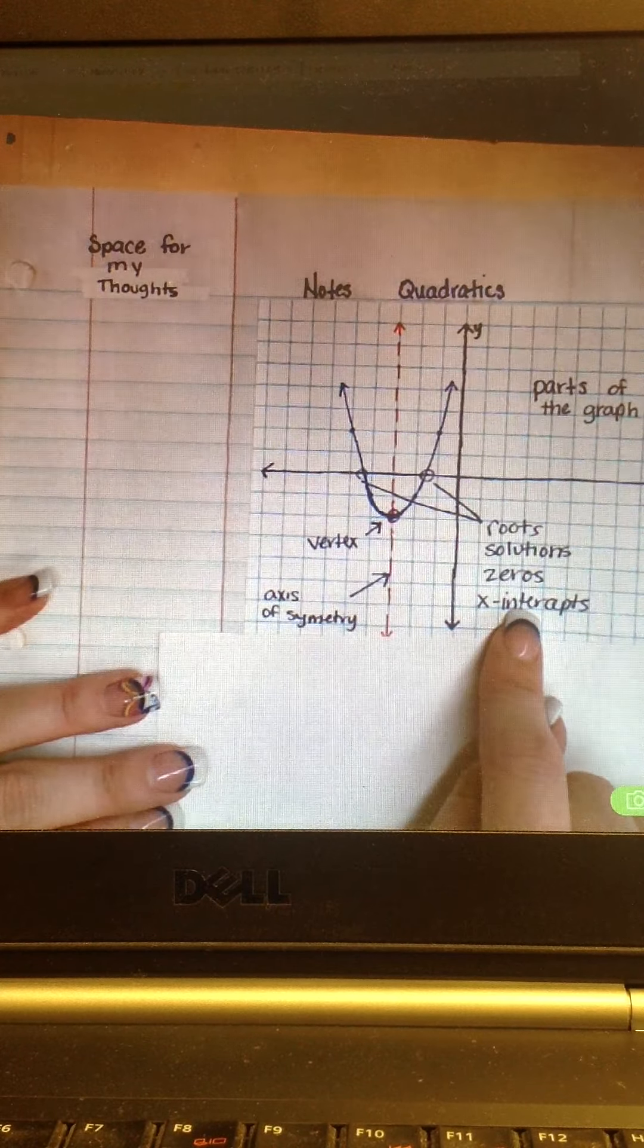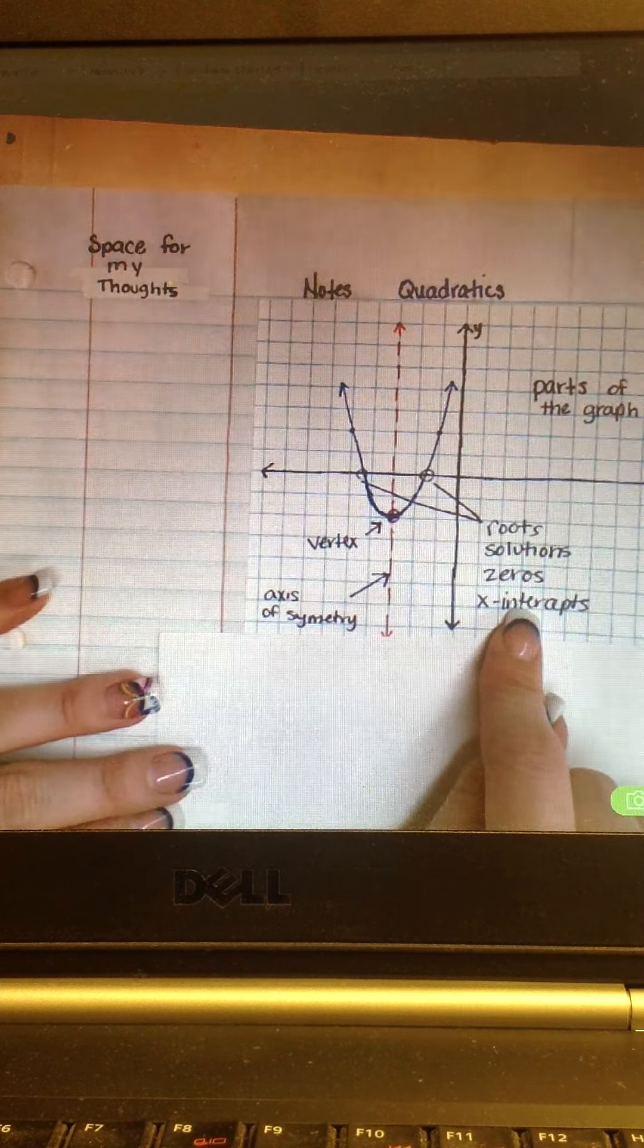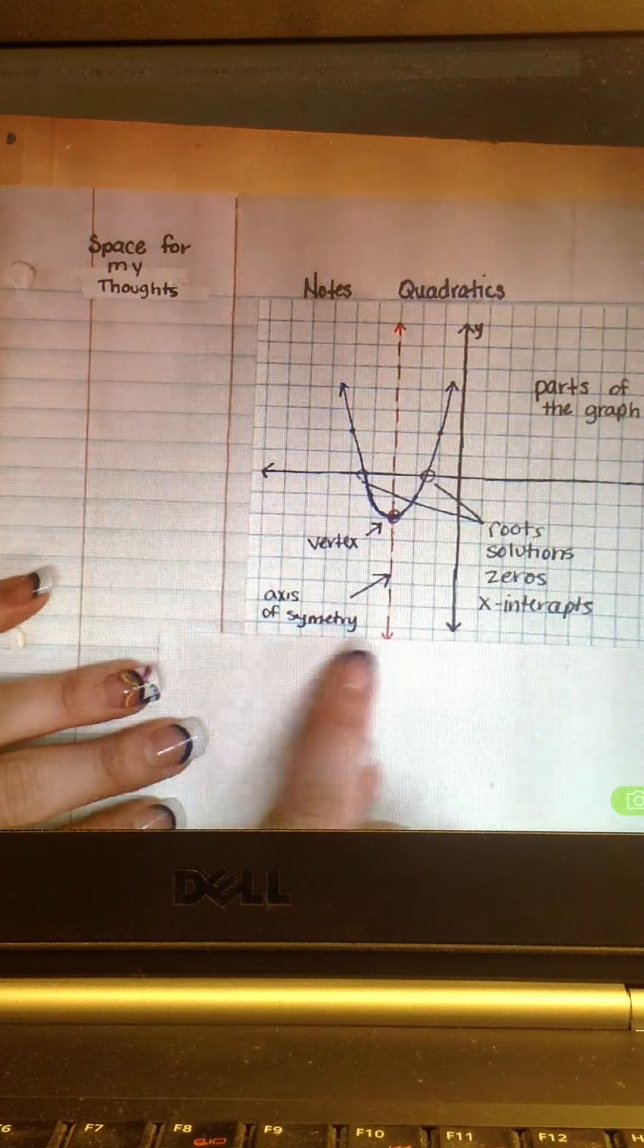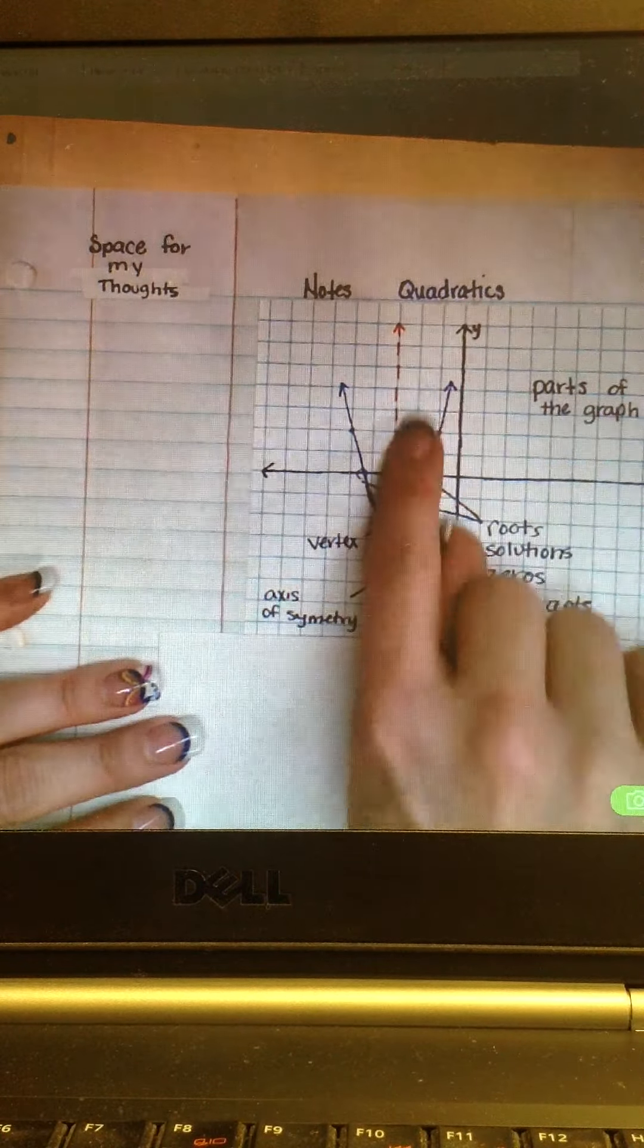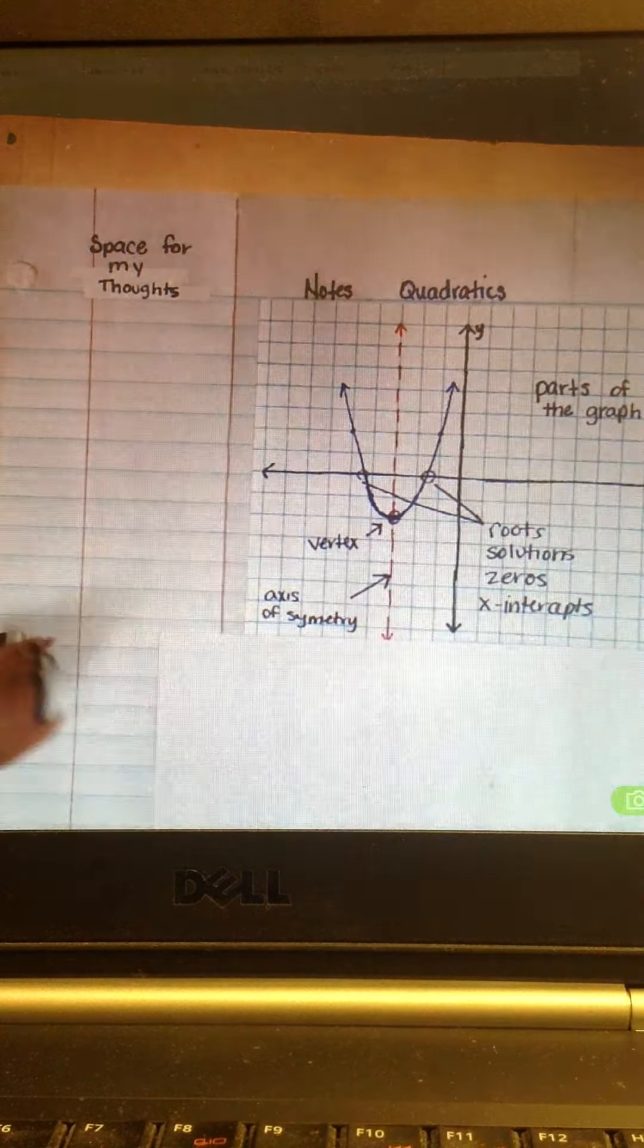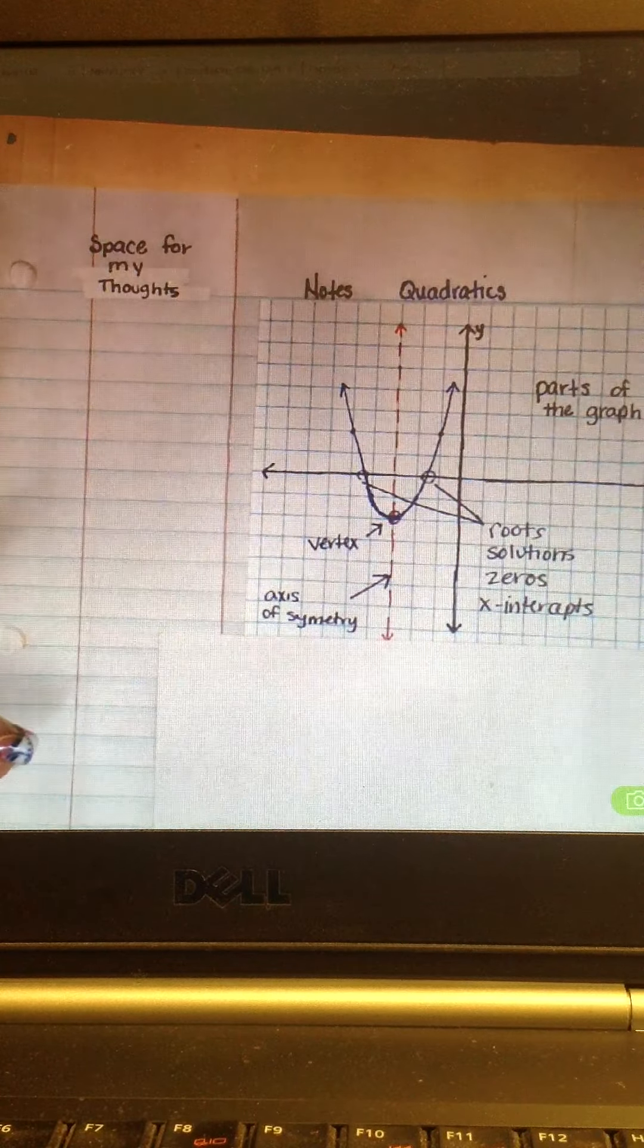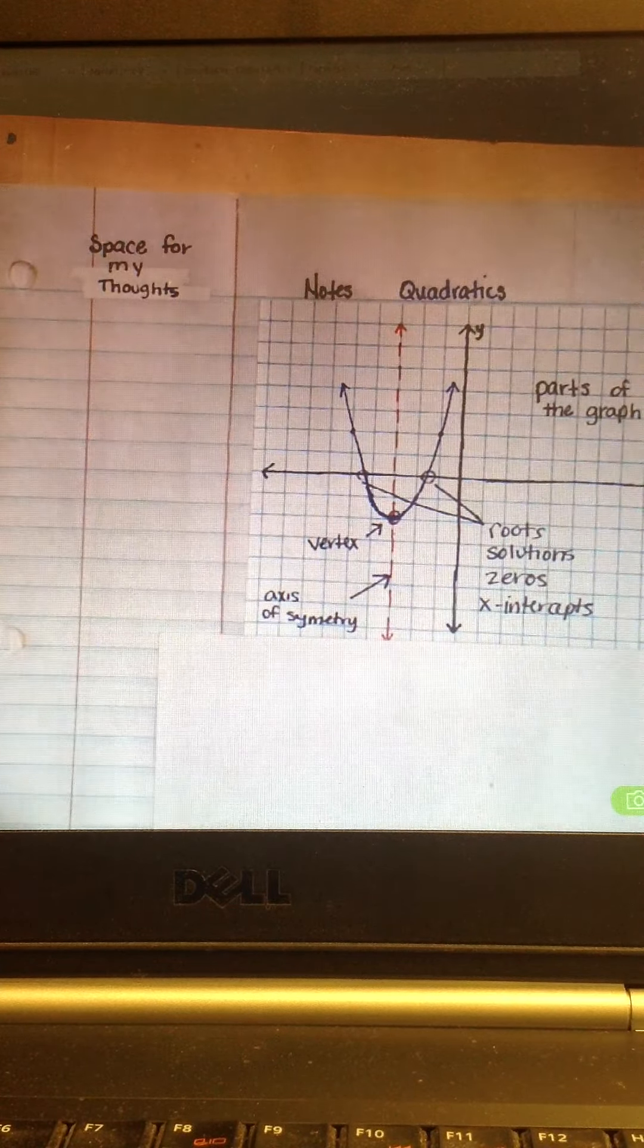Roots, solutions, zeros, X intercepts. They're interchangeable words in math. This line right here is the axis of symmetry. If you take a look, it's the line that the graph is symmetrical around. So it's the axis of symmetry.